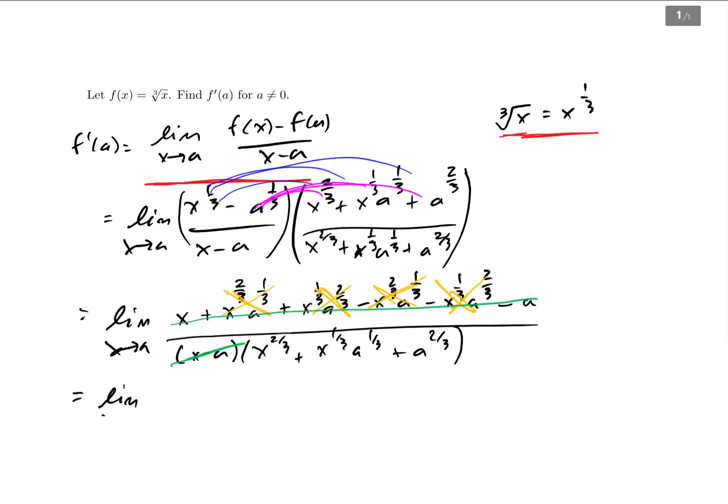So this is the limit as x approaches a of one over x to the two thirds, plus x to the one third, a to the one third, plus a to the two thirds. If I substitute in a now, which I'm allowed to do because I don't get a domain problem, I end up with a to the two thirds, plus a to the one third times a to the one third, is a to the two thirds, plus a to the two thirds.